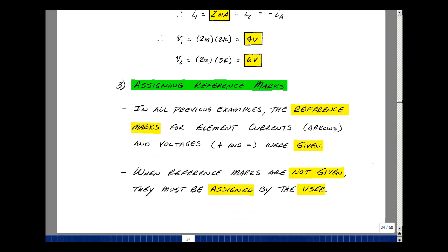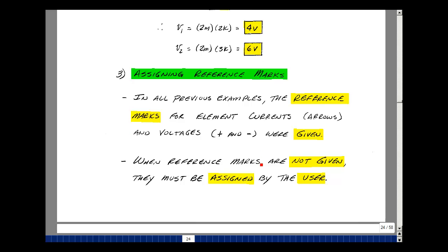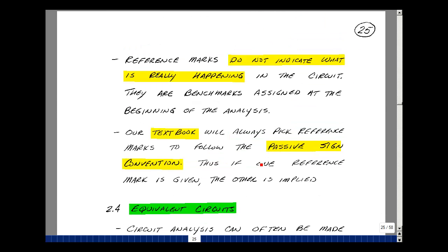In these examples that I just did, I picked a reference voltage and current. Now when these aren't given to you, then you'll have to assign them. But they're really an arbitrary decision. It's not really what's happening in the circuit. It's just simply I'm going to assign a voltage or a current. Now we're using a passive sign convention in our textbook and also in the course for most things. And so if you pick a direction of current, then the voltage will become specified based on the element absorbing power.